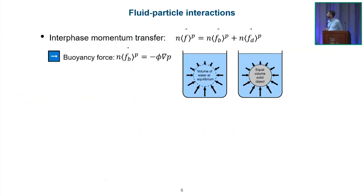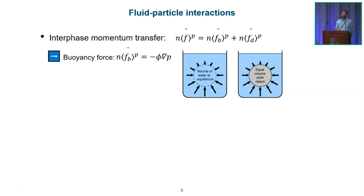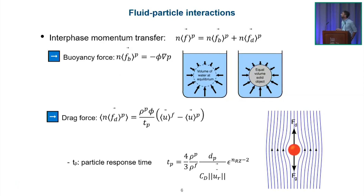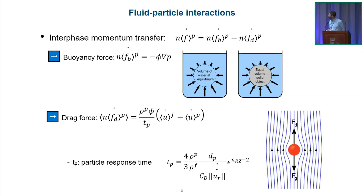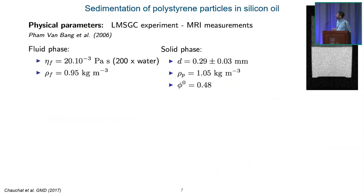We need to provide a granular stress model representing particle-particle interactions, a model for fluid-particle interactions, and account for the presence of particles on the fluid shear stress. For fluid-particle forces in a laminar flow, we need Archimedes' buoyancy force, introduced as minus phi grad P. If particles have very small inertia, we can assume the drag force is only Stokes drag. If there are multiple particles, an hindrance function is needed to represent the crowding effect of particles on the drag.